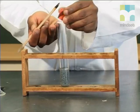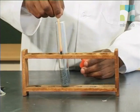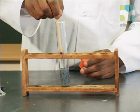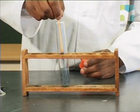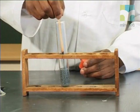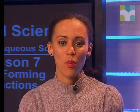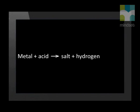So, let's test for the presence of hydrogen gas. We place a lit splint into the mouth of the test tube and — did you hear the popping sound? So, we were correct in our prediction. Hydrogen gas was formed. As a general rule, when a metal reacts with an acid, it forms a salt and hydrogen gas.